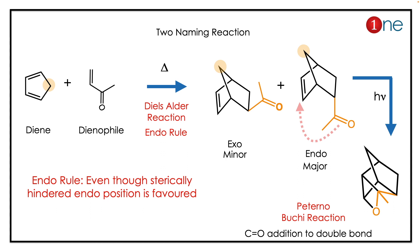Then, since you have light (an oxidant), the Baeyer-Villiger reaction is possible — it is an [O] addition to the double bond. Finally, a complicated mildly cyclic compound is formed. An important fact about the Diels-Alder reaction is the endo rule: even though the endo position is a steric position, the endo product is always formed, not the exo product.